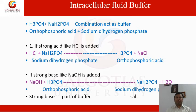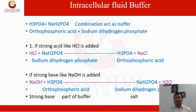The intracellular buffer is the phosphate buffer: orthophosphoric acid (H3PO4) plus sodium dihydrogen phosphate. When hydrochloric acid is added, sodium dihydrogen phosphate combines with HCl and forms H3PO4. When strong NaOH is added, NaOH combines with orthophosphoric acid and forms sodium dihydrogen phosphate. In this way, the effect of the base is neutralized.